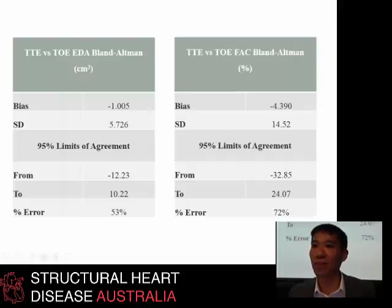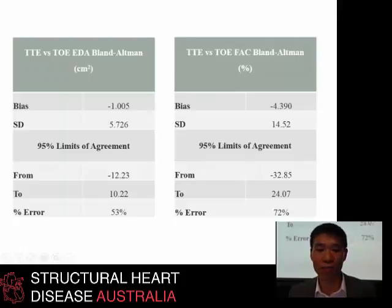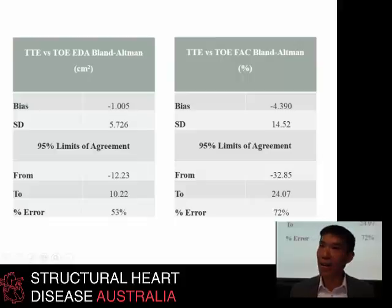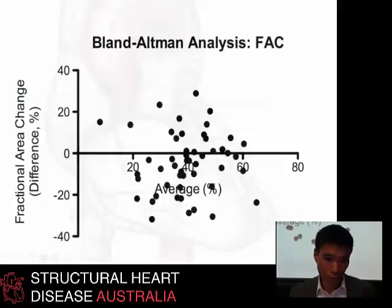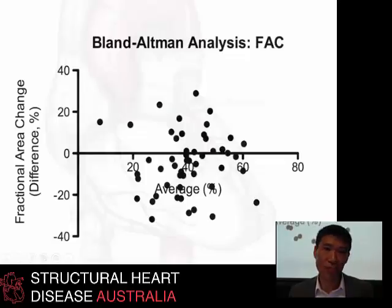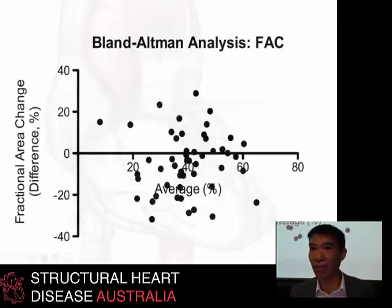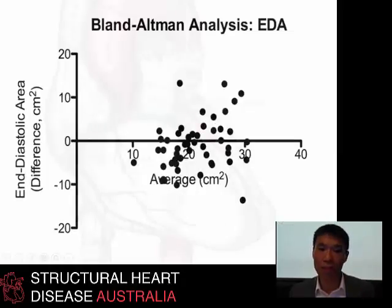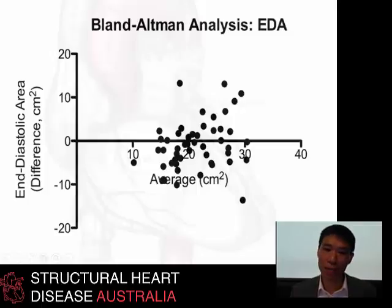There was a very wide standard deviation of the 95% limits of agreement between the two modalities. The percentage error is a proportionality of the limits of agreement compared to what the average measurement is in the sample population — essentially saying that if the limits of agreement are wide, how wide are they relative to the average measurement you're taking. For fractional area change where the average upper limit of normal is 35%, a percentage error of plus or minus 10 to 15 doesn't really bode well for validation between methods.